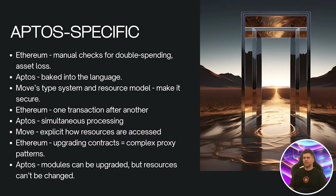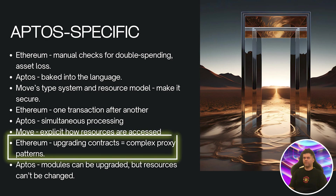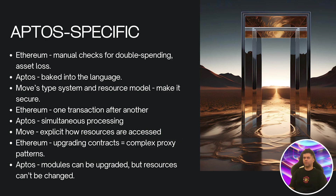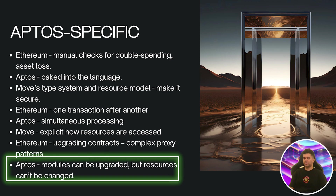Lastly, let's touch on upgrade patterns. In Ethereum, upgrading contracts often involves complex proxy patterns. Aptos takes a different approach — it allows for more straightforward upgrades but with some important caveats. Modules in Aptos can be upgraded, but resources can't be arbitrarily changed once they're published. This means you need to think carefully about your data structures from the get-go. Plan for extensibility but also for backward compatibility.